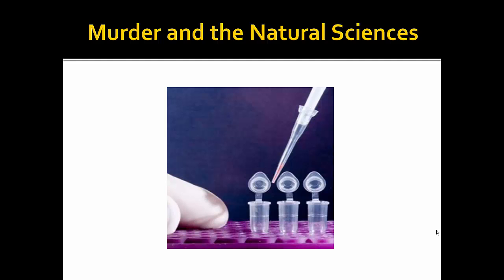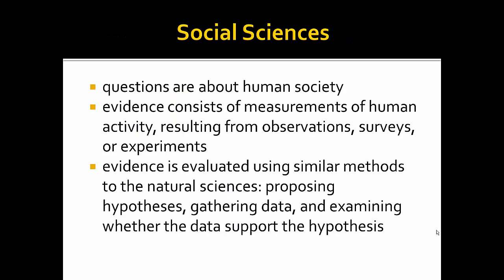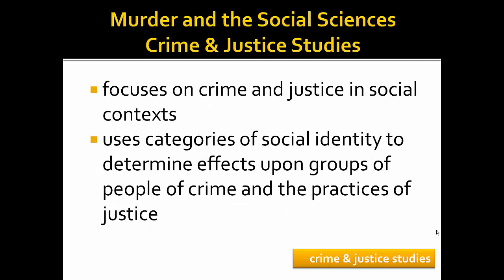Finally, we will turn to the social sciences. In the social sciences, we ask questions about human society and societies. Researchers develop questions and design methods for answering them, such as making observations, administering surveys, or other questions and experimental methods. Social scientists also develop hypotheses, collect data, examine whether the data supported their hypotheses, and theorize about their results. Evidence collected includes measurements about human activities. Crime and justice studies researchers study crime and justice as sociological phenomena using theoretical frameworks that help explain the effects of crime and justice practices on certain populations.